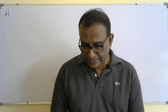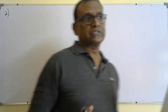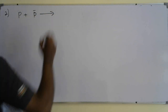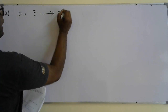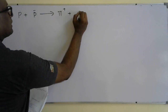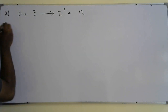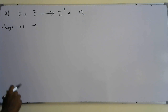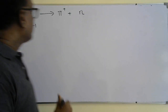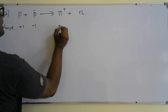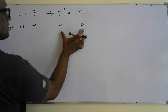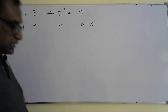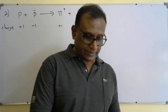For answer A — positive pion and neutrons: proton is +1, antiproton is −1, so the total charge before interaction is zero. But positive pion is +1 and neutron is 0, giving total charge +1 after. Charge is not conserved, so answer A is not acceptable.